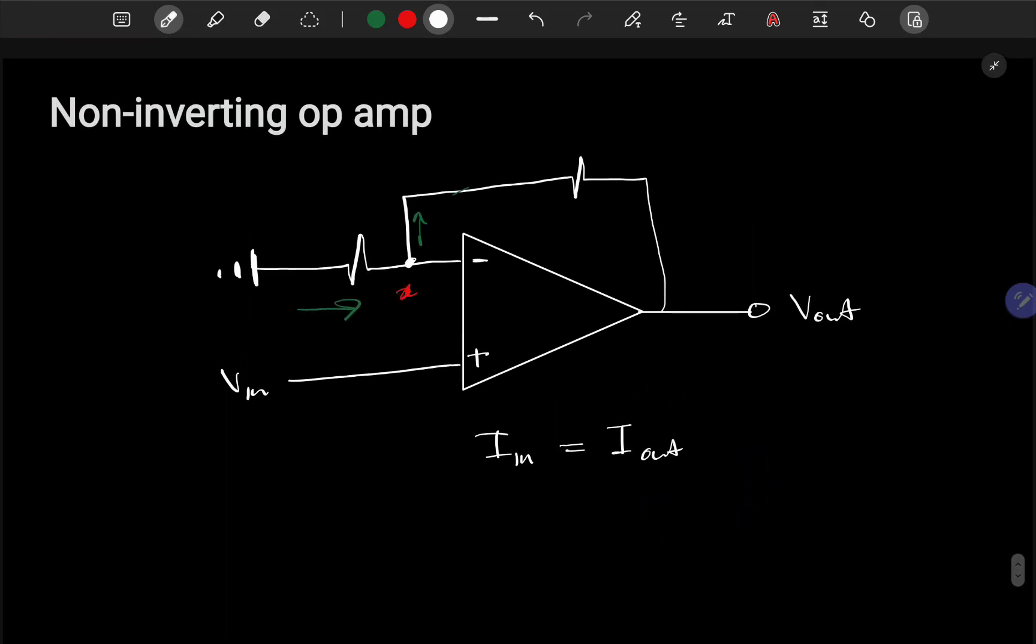With that being said, what is the current going in? The current going in is (0 - Vin) over R1, which should equal (Vx - Vout) over R2.